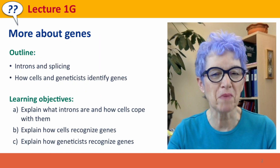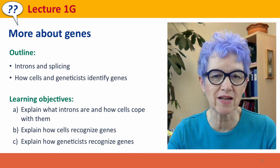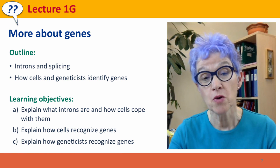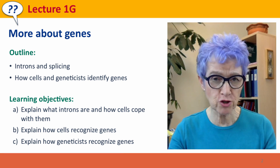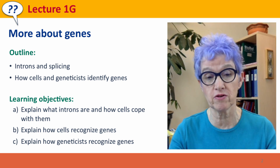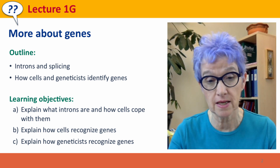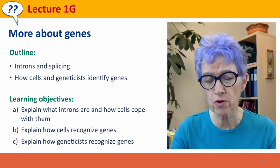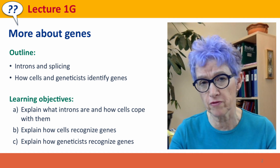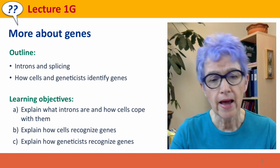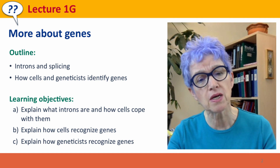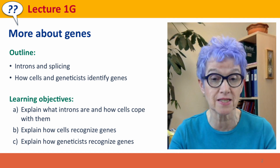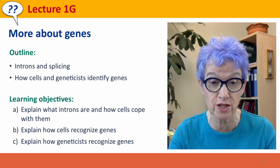Hi, everyone. Welcome back to Useful Genetics. This is Lecture 1G, where we're talking more about some features of genes that we haven't discussed yet. In particular, we'll talk about the very peculiar phenomenon of introns and splicing, and we'll talk about how cells, and particularly how geneticists, identify genes.